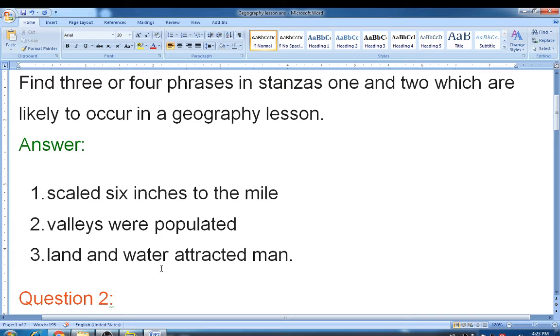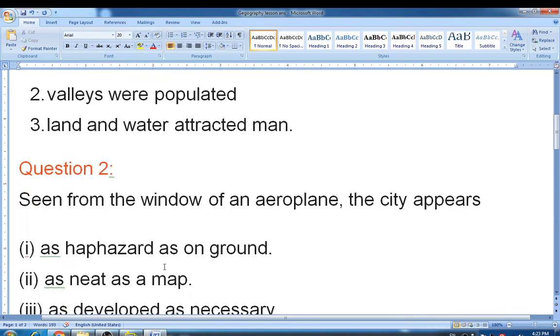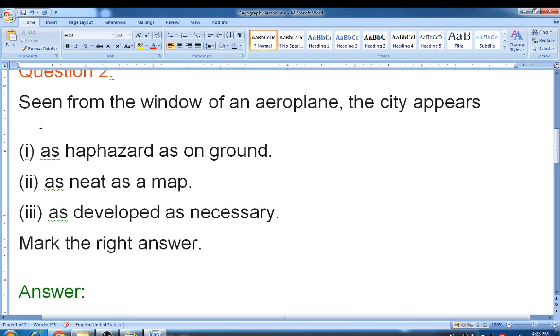So these are the phrases that actually occur in the geography lesson. Look at that. Question number two: seen from the window of an aeroplane, the city appears...